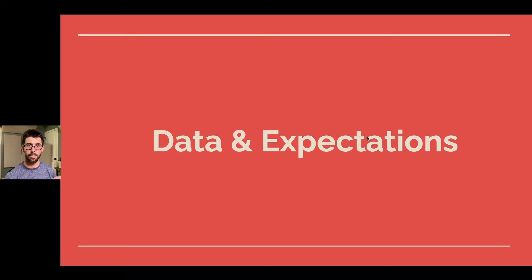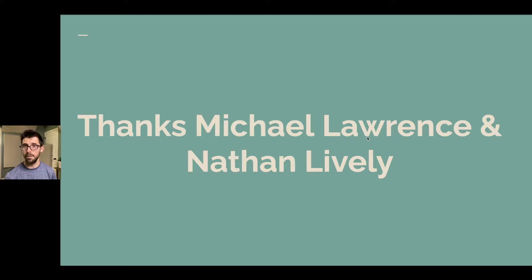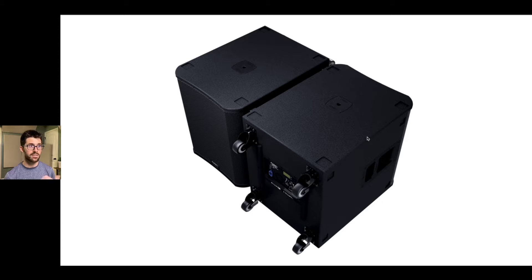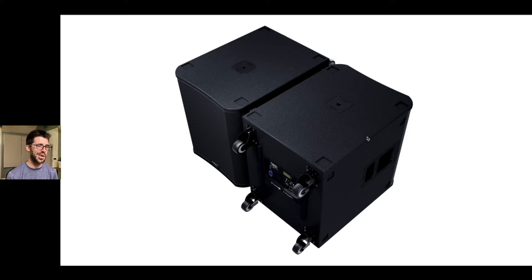Here's some field data on what success looks like. A big thanks to Michael Lawrence and Nathan Lively for the following content. Michael did a fantastic review of the QSC KS118 sub and its different patterns. The KS118 has a built-in cardioid preset — you just place two units next to each other or stacked on top, one facing front and one facing back, and it automatically adds the delay line and polarity inversion to the rear sub, giving you a nice cardioid shape.